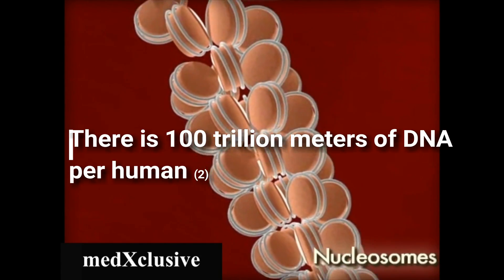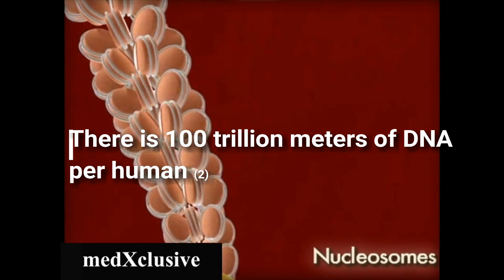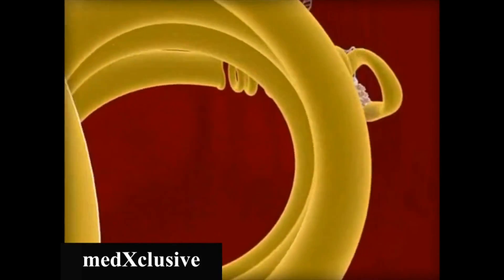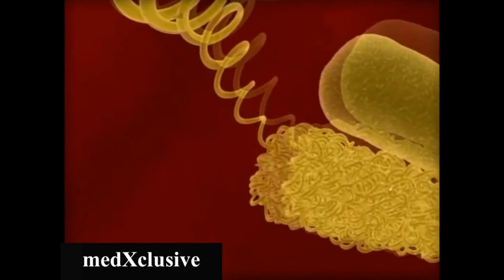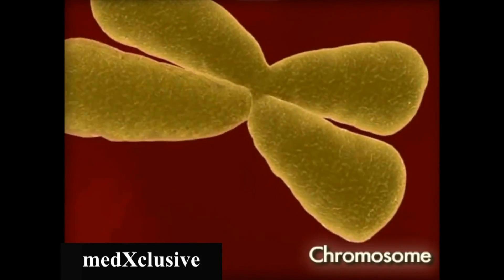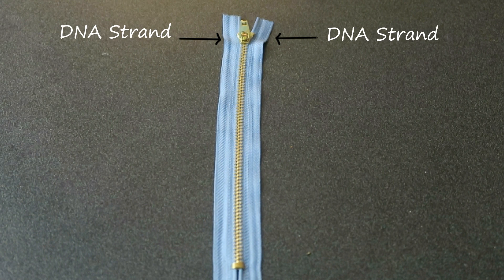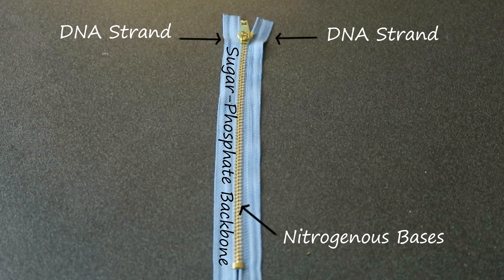This double helix winds and winds around itself and other proteins so tightly that eventually it forms chromosomes, which can then be packed into the nucleus of a cell. Think of DNA as a zipper: the two sides represent the two strands, the jean part is the sugar-phosphate backbone, and the teeth are the nitrogenous bases.